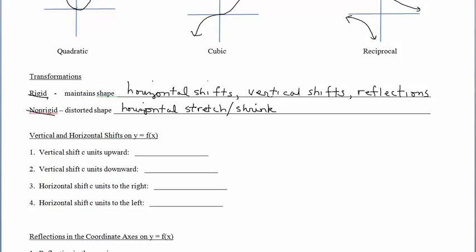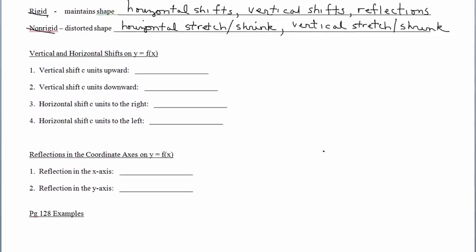Making it wider or more narrow — you might want to call that a compression or shrink. Then we'll look at vertical stretches and shrinks as well. Let's look at some vertical and horizontal shifts — some rigid transformations. What does that look like in equation format? I can see graphically that a shift left or right is a horizontal shift, and a shift up or down is a vertical shift, but what does it look like in the equation?